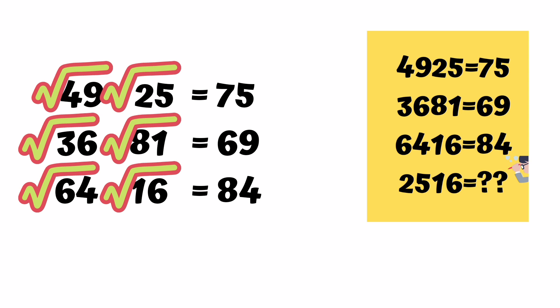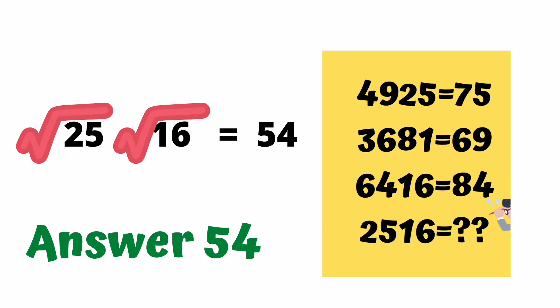Friends, we will follow this process for our final solution. What should our final solution be? 2516. It means square root of 25 is 5 and square root of 16 is 4. Answer is 54.